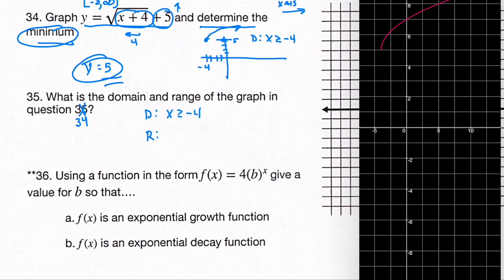And then it goes up forever, so we just say the y's are greater than or equal to 5. And that's it, just interpreting the graph and looking at the x values, where does it start?